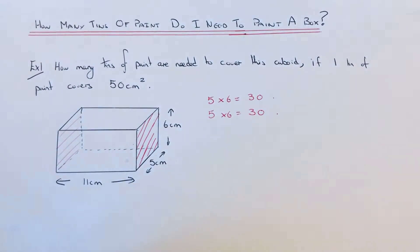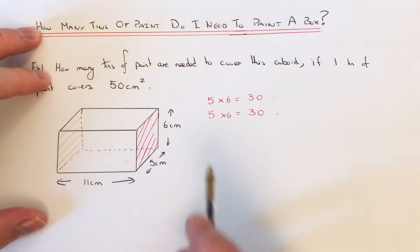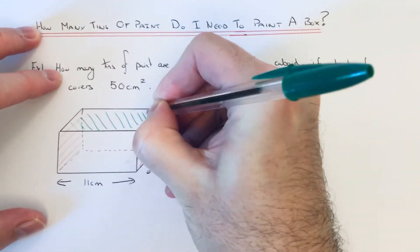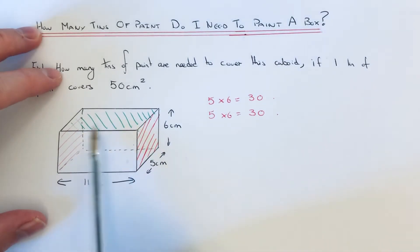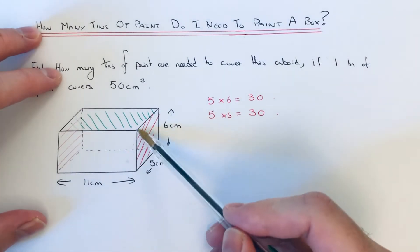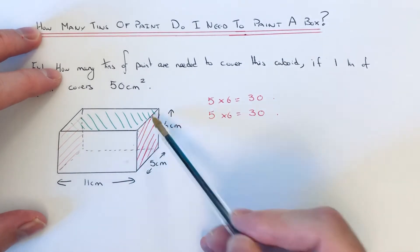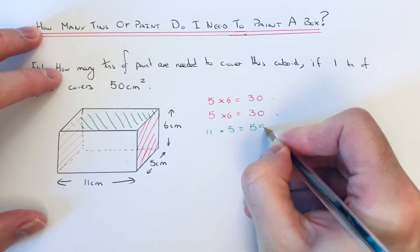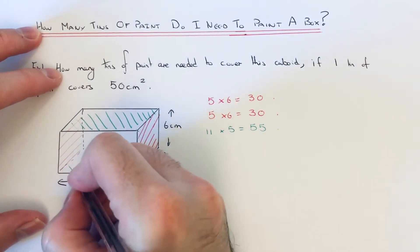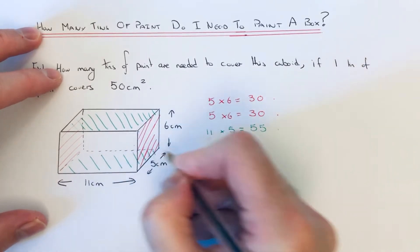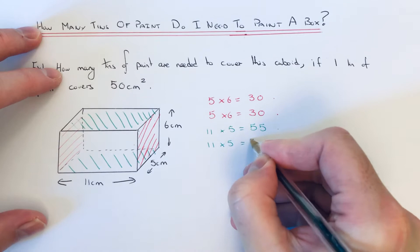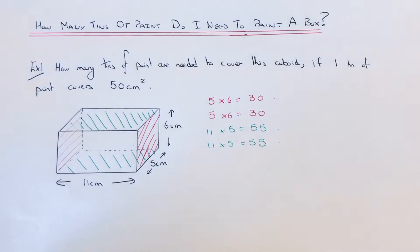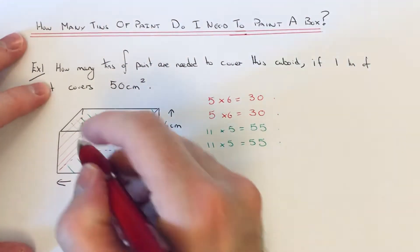We've done two faces so far. The next face I'm going to do is the top of the box. The area of the top rectangle will be 11 times 5, so 11 by 5, so another size of 55. The top face is the same as the bottom face, so I'm going to copy that one down again.